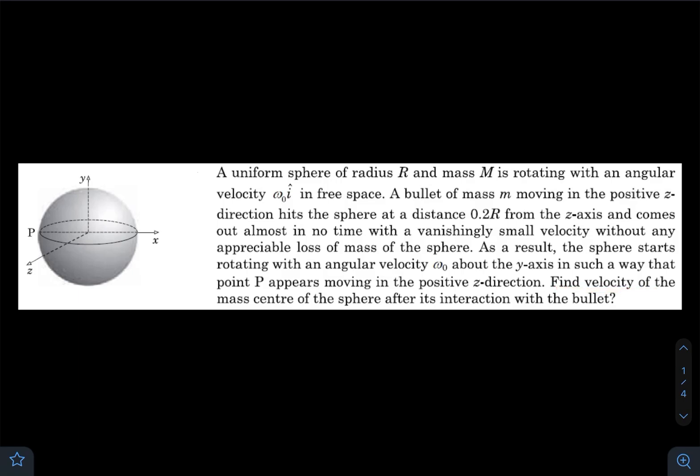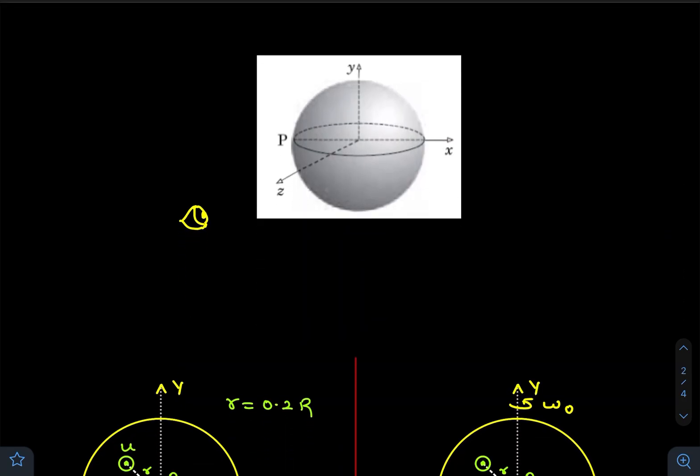Find the velocity of the mass center of the sphere after its interaction with the bullet. This is the diagram that has been provided in the question, so this sphere is rotating with respect to the x-axis like this.